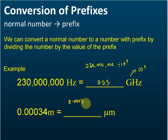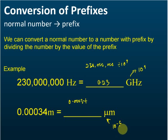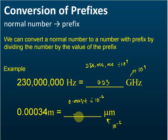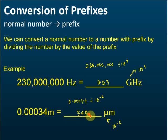Next: 0.00034 to micrometers. Micro is equal to 10 to the power of negative 6, so we divide 0.00034 by 10 to the power of negative 6. The answer is 340 micrometers.